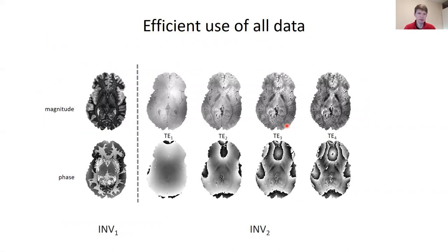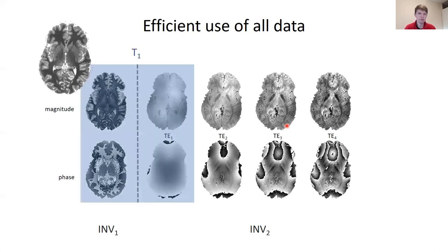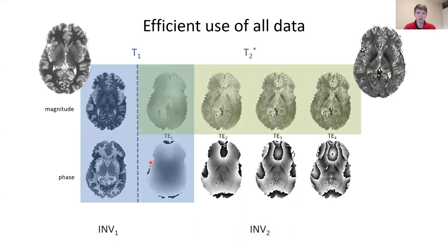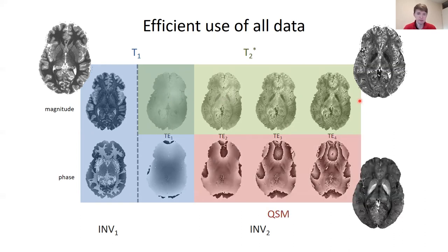We arrive with a set of images from these two inversions that we can efficiently use to compute quantitative maps for different purposes: for T1 mapping using the data of the first inversion and the first echo time of the second inversion with phase data added, for T2* mapping using the magnitude images of only the second inversion multi-echo data, and then we leverage the phase images of the second inversion to do QSM.